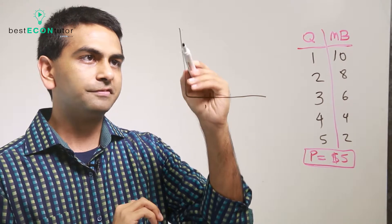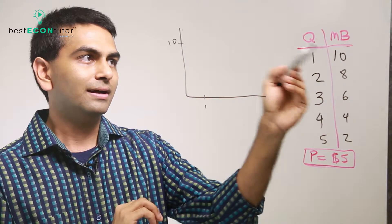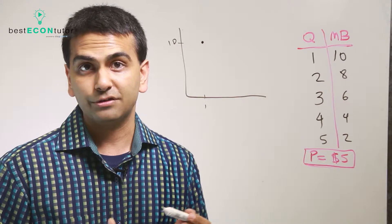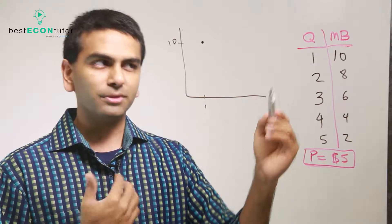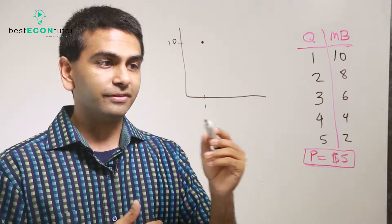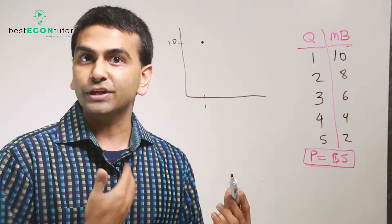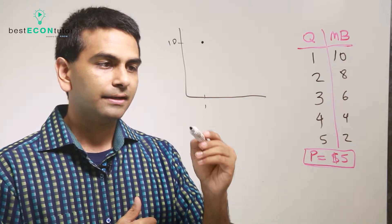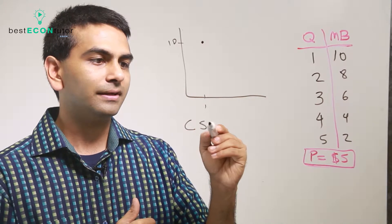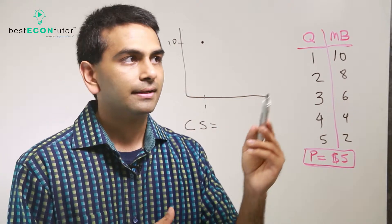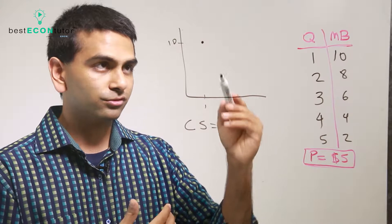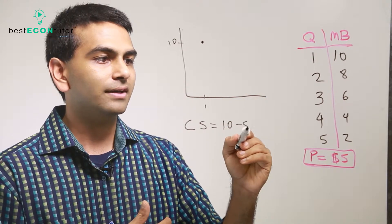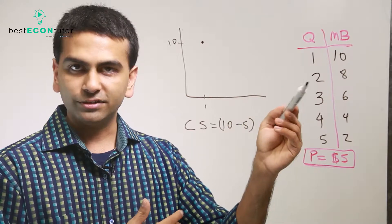The very first item might have given you a ten dollar benefit, but you only have to pay five dollars for it. So there's a gap — that difference of five dollars extra that you would have paid for the good — that's called your consumer surplus. Consumer surplus is the extra amount you would have paid: the ten dollars you were willing to pay minus the five dollars you paid for that first good.